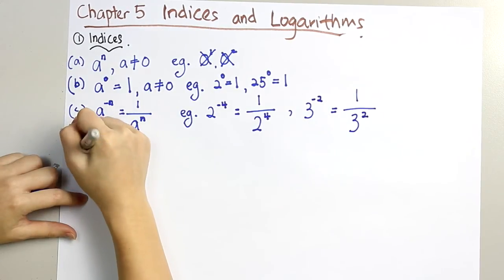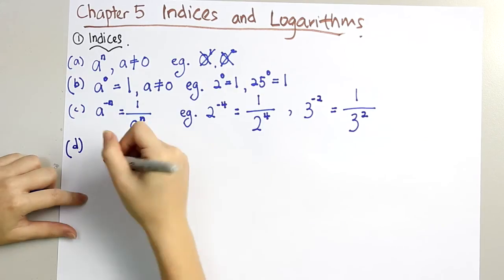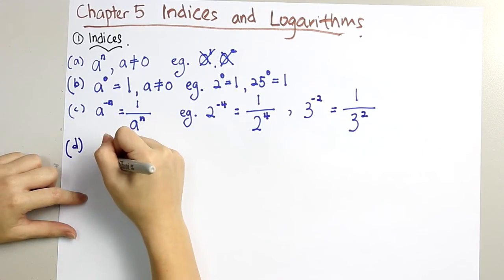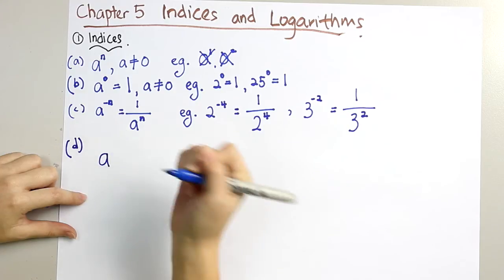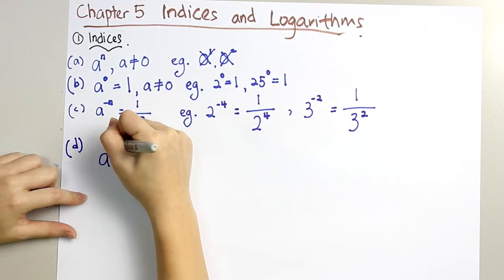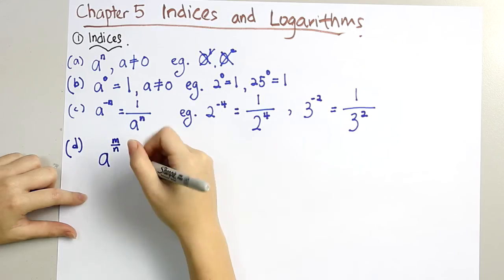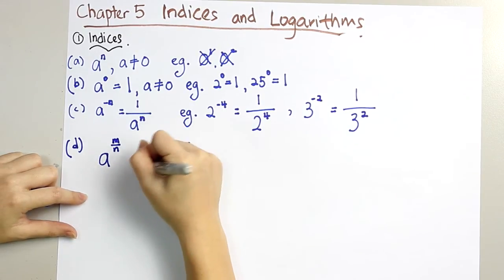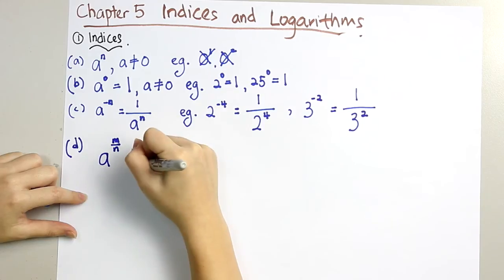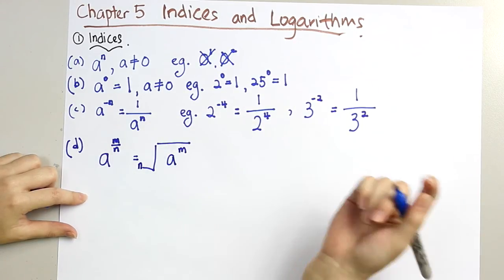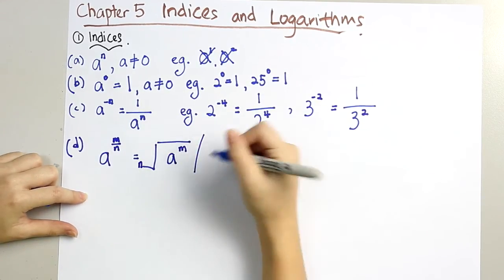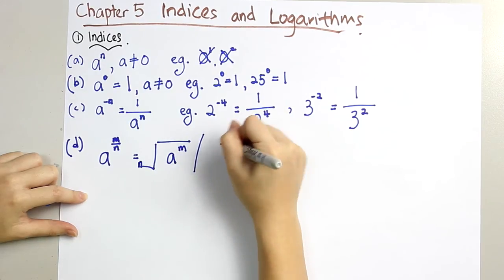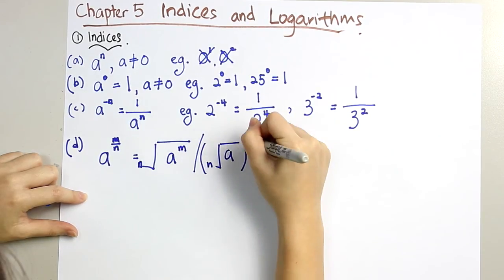D. For this, it's a bit more complicated. A to the power of m over n. Then it will become this. Or this. Let's do a few examples.